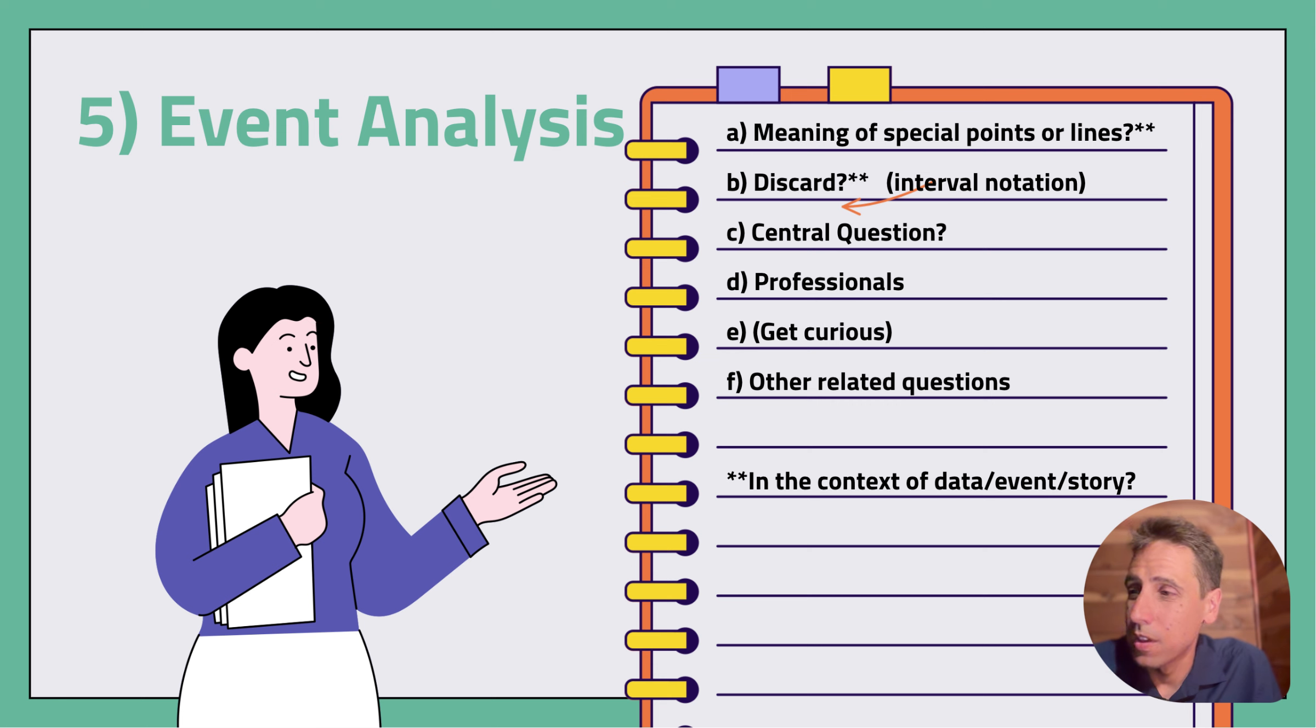the vertex or the axis of symmetry or the point of rotation or the asymptote, do any of those special points or lines have any actual meaning in the context of the real event that actually occurred? Does the y-intercept mean anything? Does the x-intercept mean anything? What is the meaning of any special points or lines?